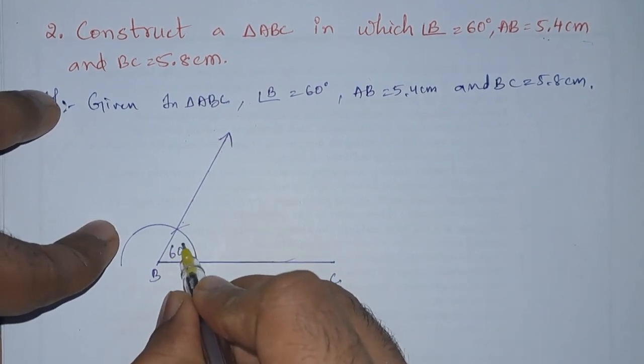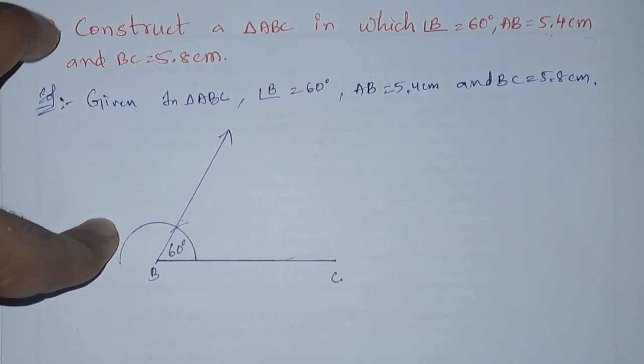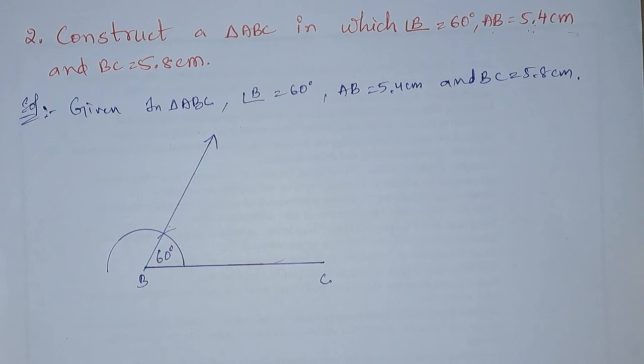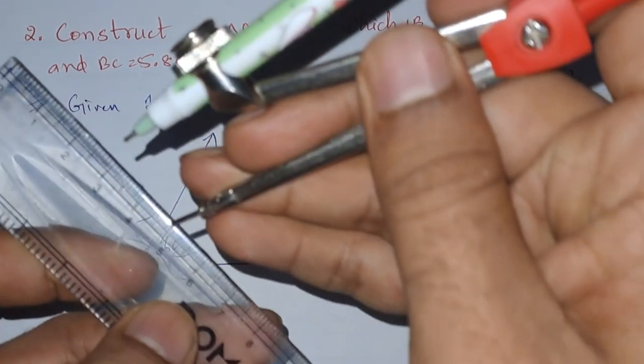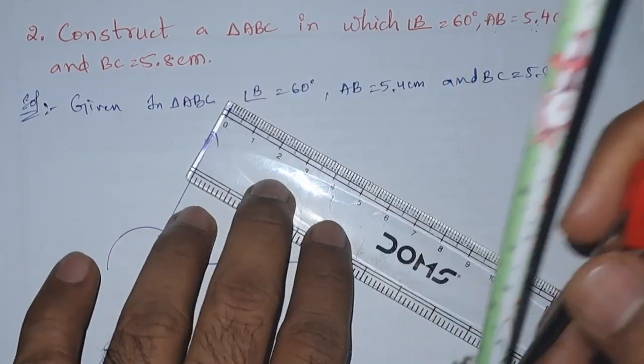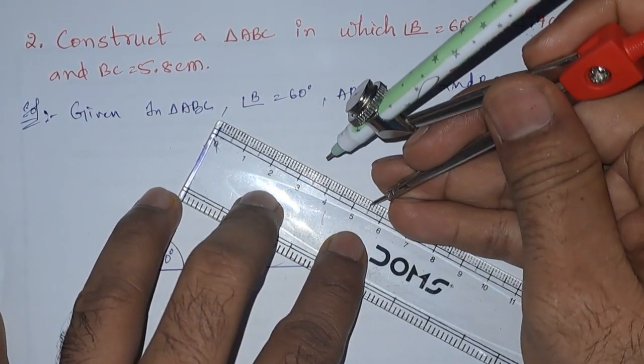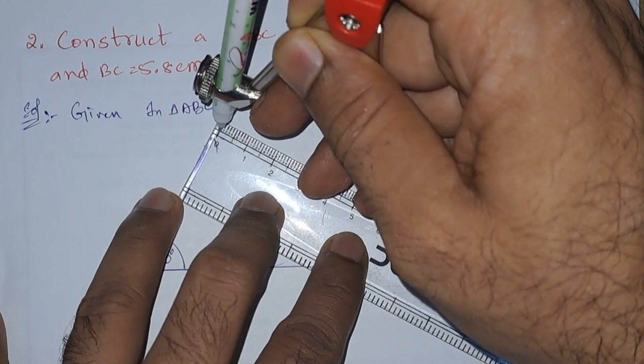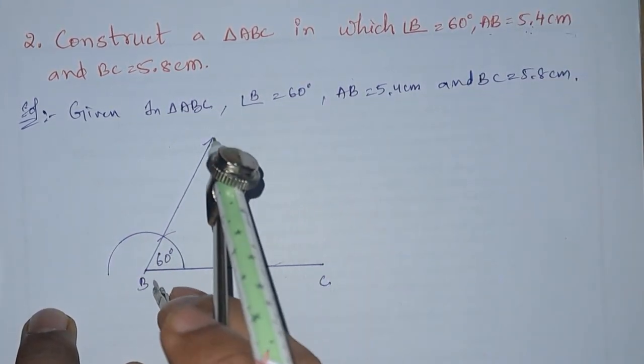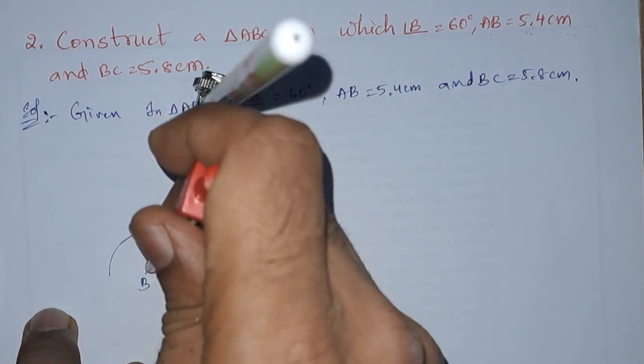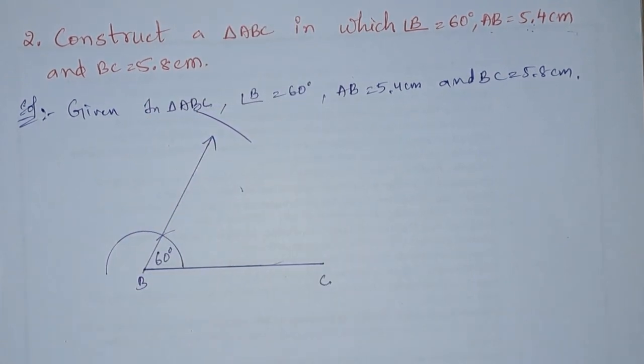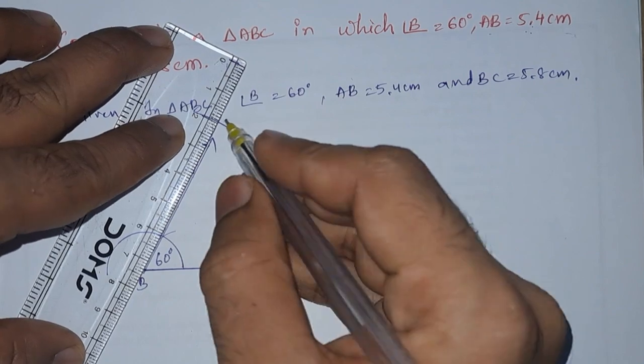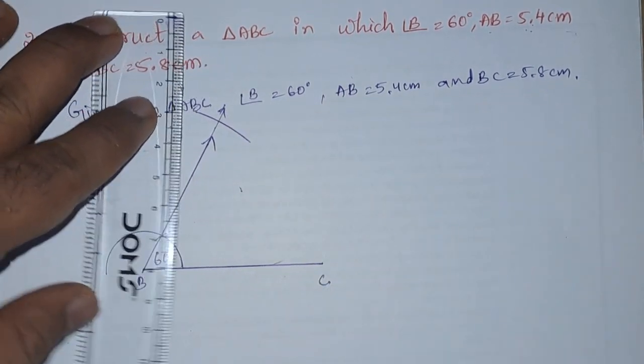We can write here 60 degrees. Next, from B to C it is 5.8, and from A to B it is 5.4. We need to take the radius as 5.4, so here it is 5.4. Next, from B we can draw the arc. You can see that the arc is not intersected by the ray, so we can again extend that ray. The point of joining, we got it.